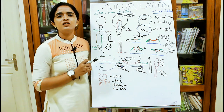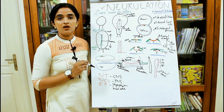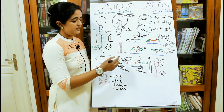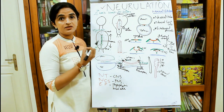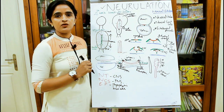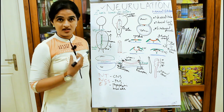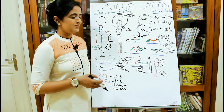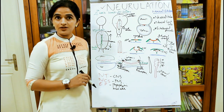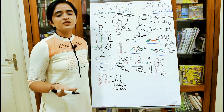What happens if the neuropores fail to close? If the anterior neuropore fails to close, the condition is called anencephaly — the cranial vault doesn't develop, and the brain is seen as a degenerated mass communicating with the surface. If the posterior neuropore fails to close, it results in a range of conditions from minor forms of spina bifida to severe forms like rachischisis, depending on severity.